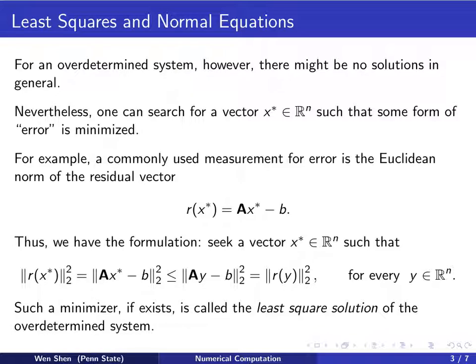And then we now have the formulation. We seek a vector x star such that the residual measured at x star, we take the square because it's a bit easier, otherwise you have a square root. That means Ax star minus b measured in the Euclidean norm square shall be less than Ay minus b measured in the same norm, that is, the residual measured at y square, and this should hold for every y in R^n.